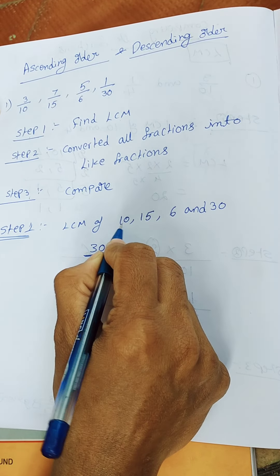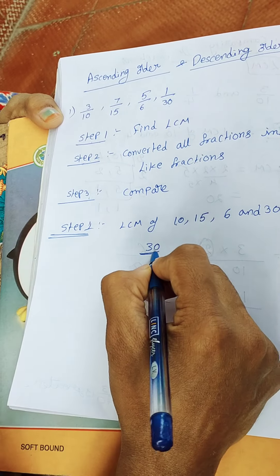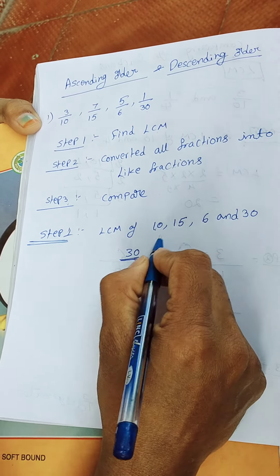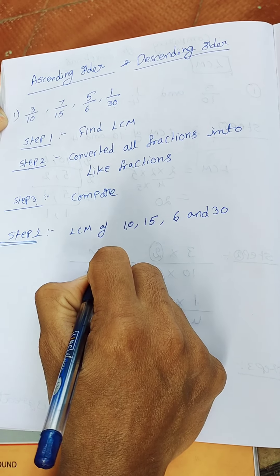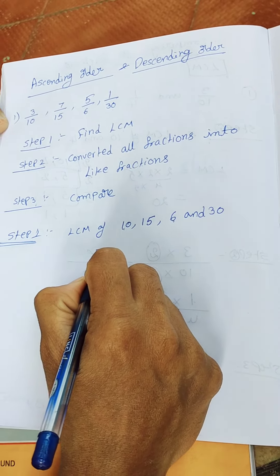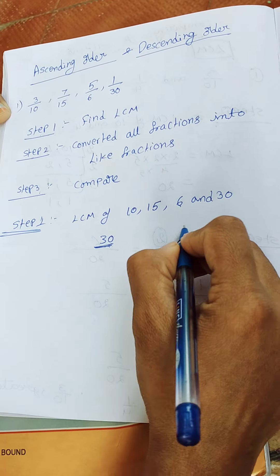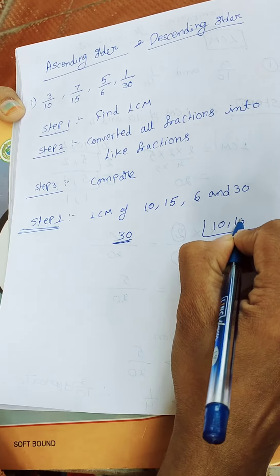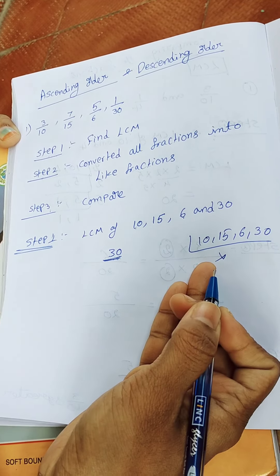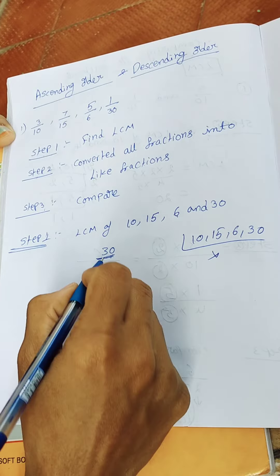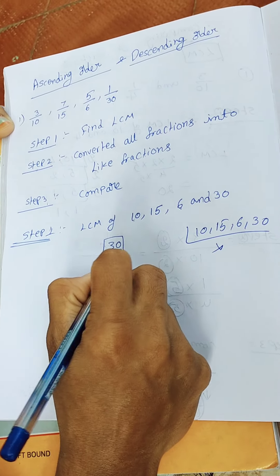We check: 30 is divisible by 10, 30 is divisible by 15, and 30 is divisible by 6. So the LCM is 30 — the greatest number is the LCM in this sum. No need to do further calculation; directly, 30 is the LCM.